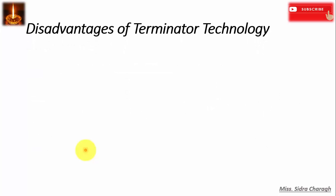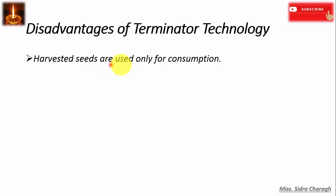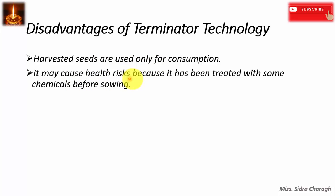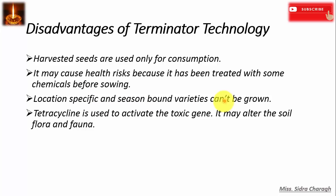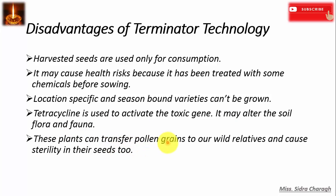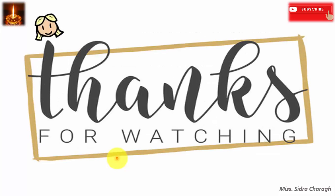The drawbacks are that seeds are used only for consumption, and it may cause health problems because seeds have been treated with chemicals before sowing. Location-specific and season-bound varieties cannot be grown. Tetracycline is used to activate the toxic gene, so it may alter the soil fauna and flora. Additionally, these plants can transfer pollen grains to wild relatives, potentially causing instability in ecosystems.